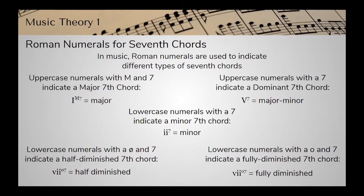Notice that all seventh chord symbols have the number seven next to them. With triads, we didn't have to write a number above them — you might add a number if they're inverted, which was the bass position symbol stuff we talked about. With seventh chords, they'll always have some kind of number: if they're root position, they'll have a seven; first inversion, a six five; third inversion, four three; and fourth inversion, four two.